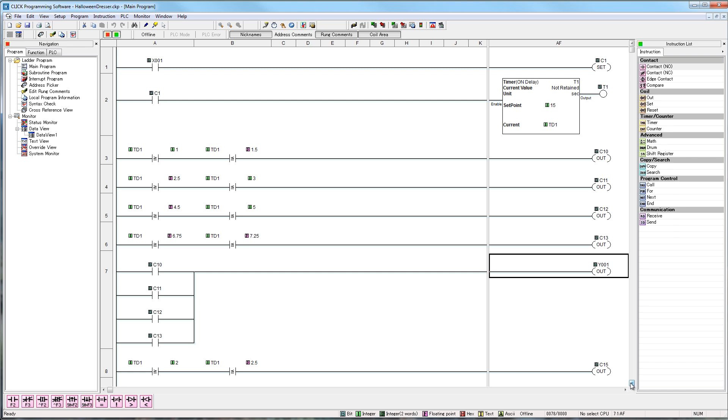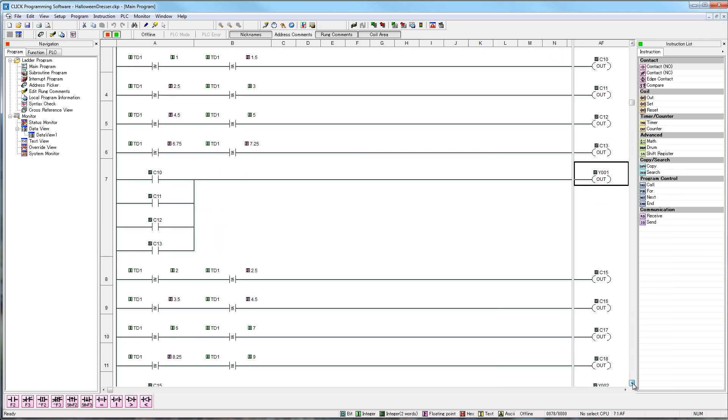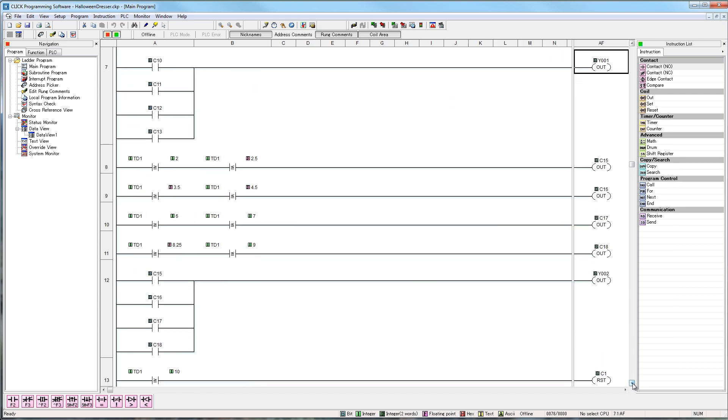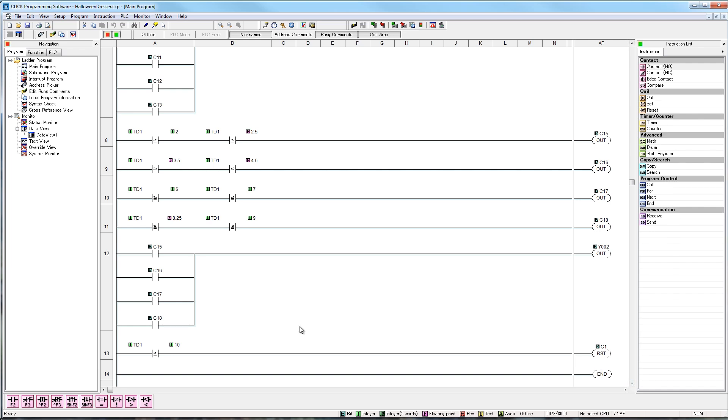So, every time the timer value compare statement is true, an internal C bit is turned on and that C bit turns on the output. This code gives us four open and close actions for each drawer. The code I used for the top drawer is basically the same, but I staggered the open and close timer values so the drawers acted opposite times. If I wanted to program the drawers open and closing more than four cycles, I could have easily extended the timer T1 up to twenty or thirty seconds and added more rungs or lines of code with compare statements and internal C bits.